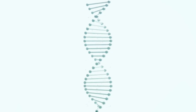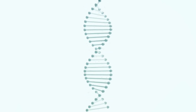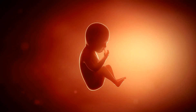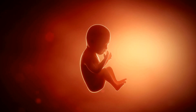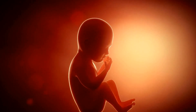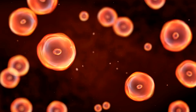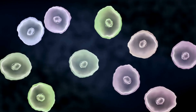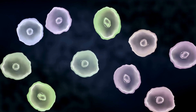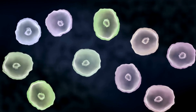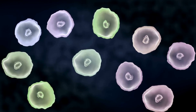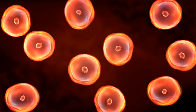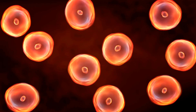This fusion of sperm and egg creates a single cell with a complete set of DNA, half from the mother and half from the father. This single cell is now a zygote, the first stage of a new human life. The zygote begins to divide, doubling its cells at an astonishing rate — from one cell to two, two to four, four to eight, and so on. Each of these cells carries the unique genetic blueprint for the new individual. This whole process, from the meeting of sperm and egg to the formation of a zygote, is an intricate dance choreographed by nature, happening in a matter of hours.